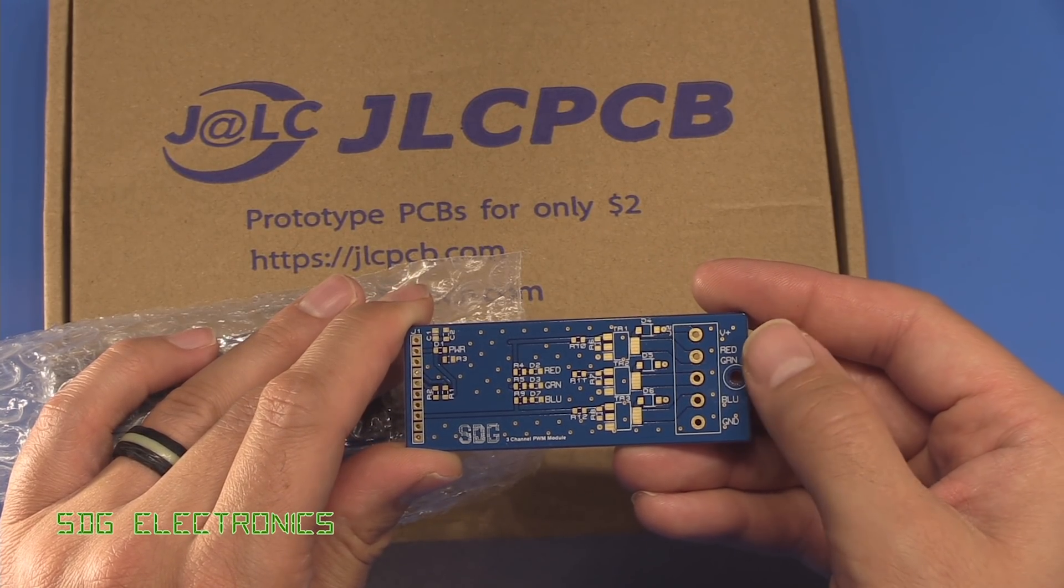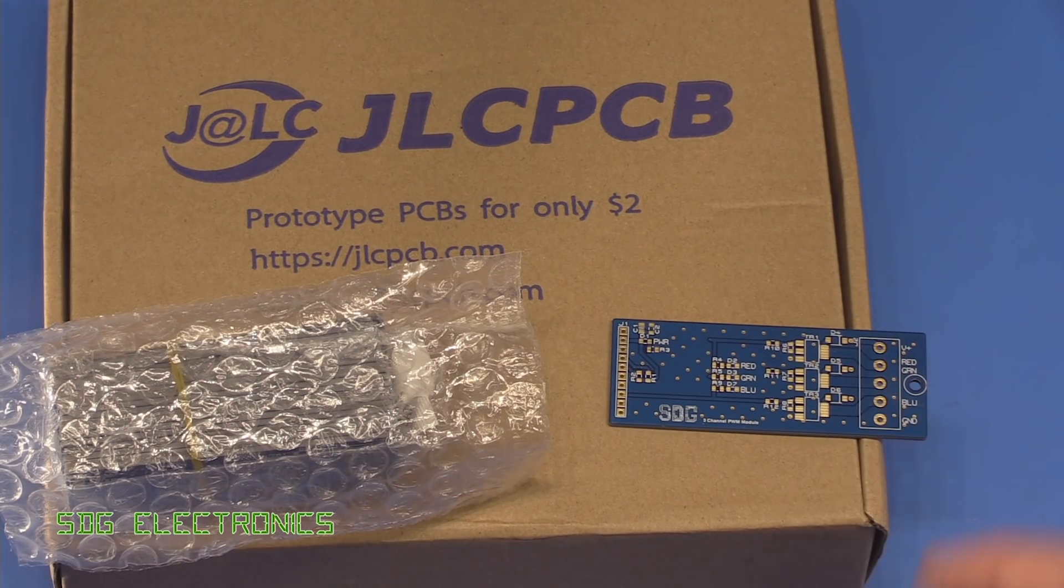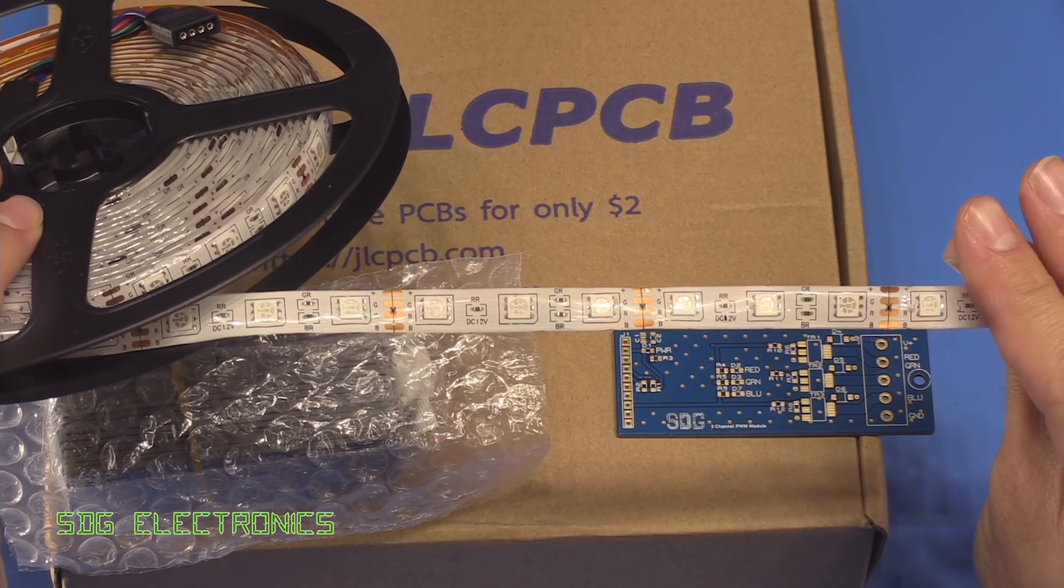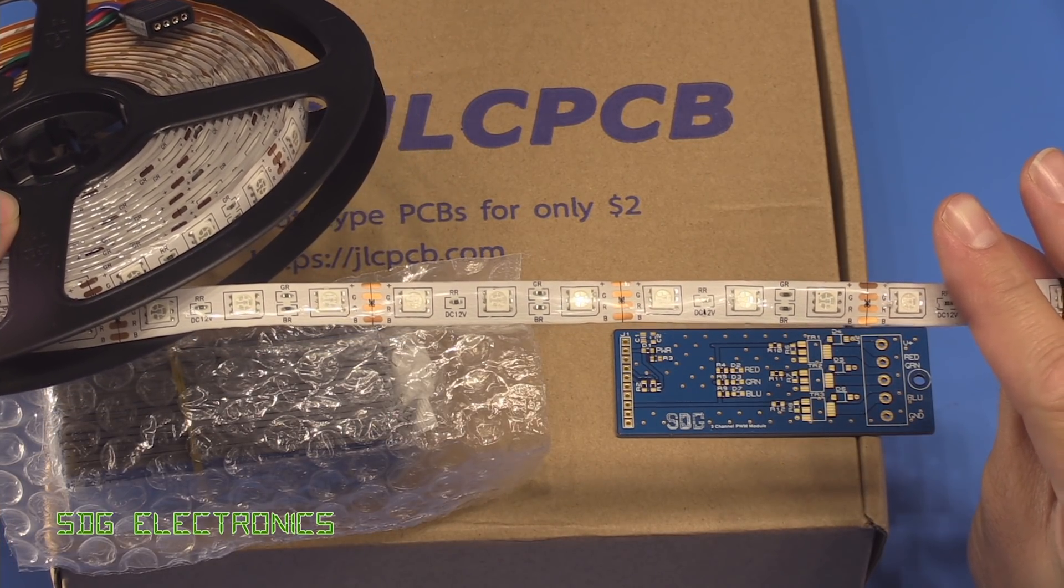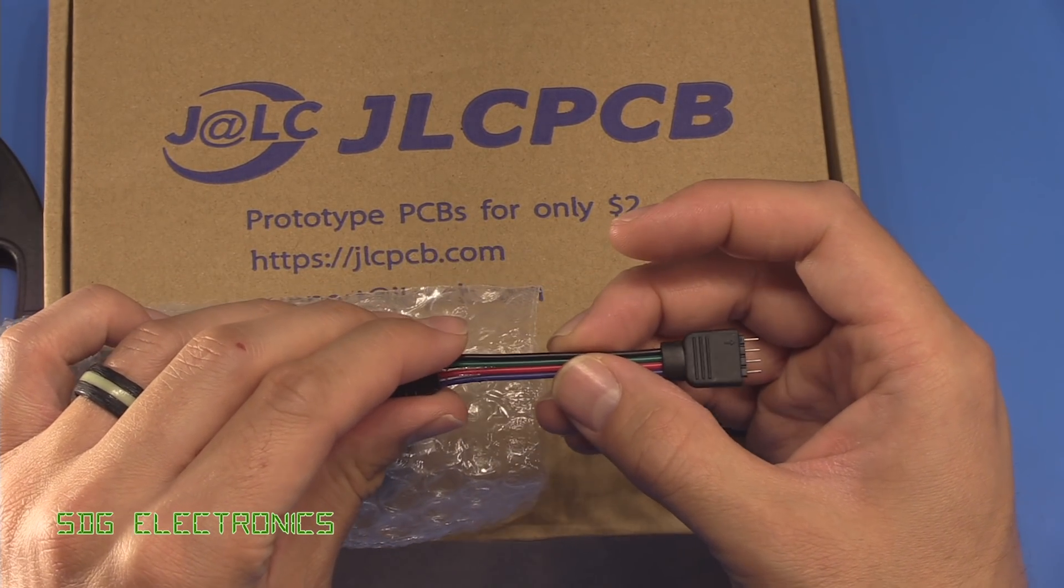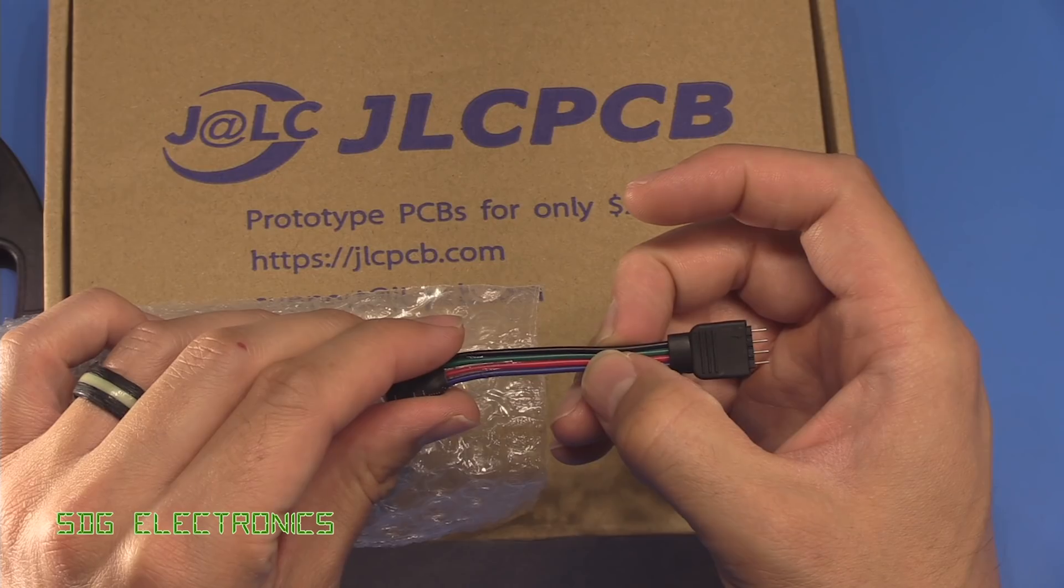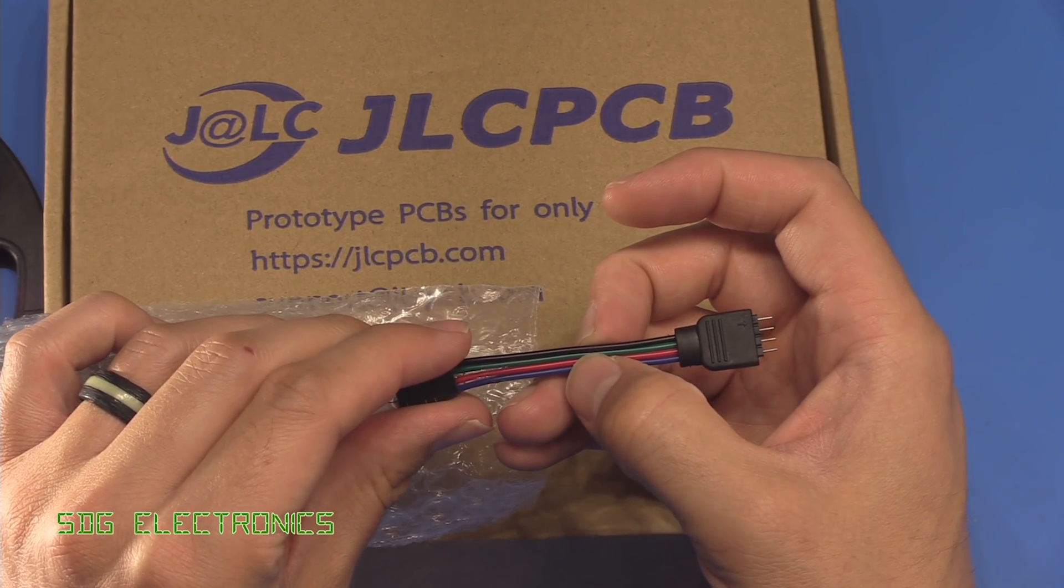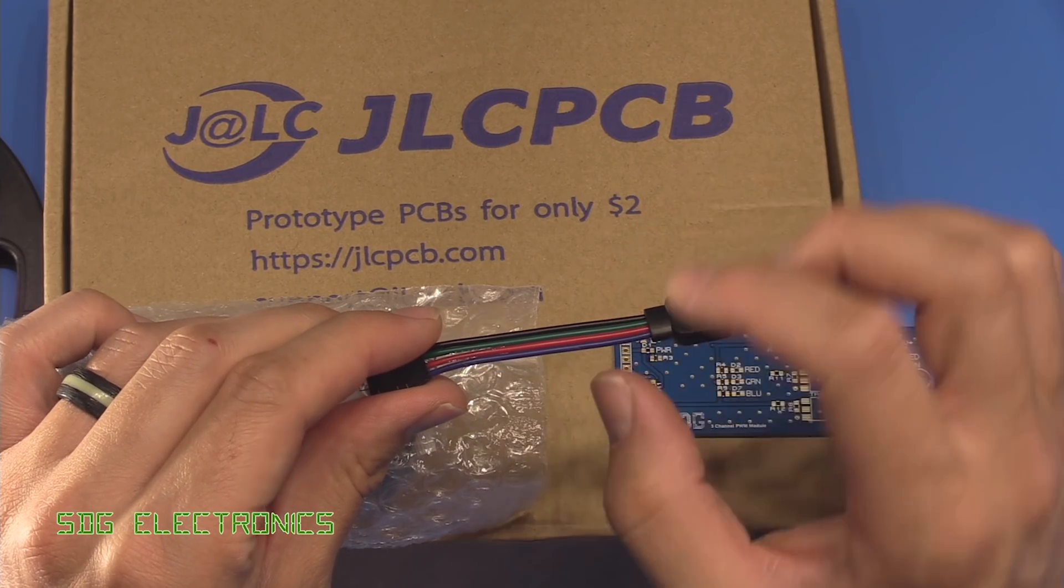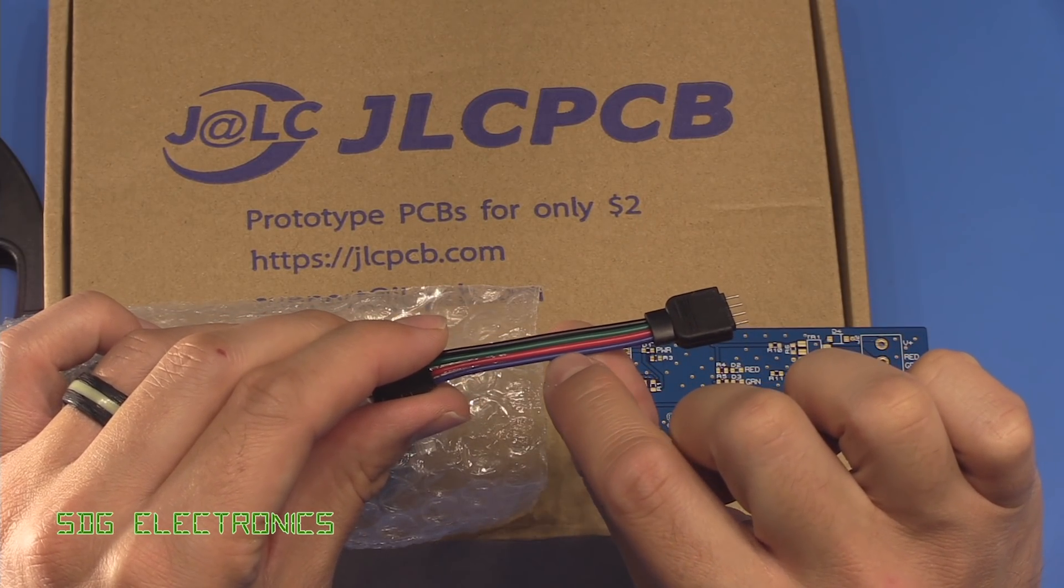These have got three channels on them for driving RGB LED strips. For example, this generic RGB strip runs from 12 volts. The black wire is the positive supply, and then you've got the cathode for the LEDs - the green, red, and blue. You apply a negative to illuminate the LEDs in any combination.